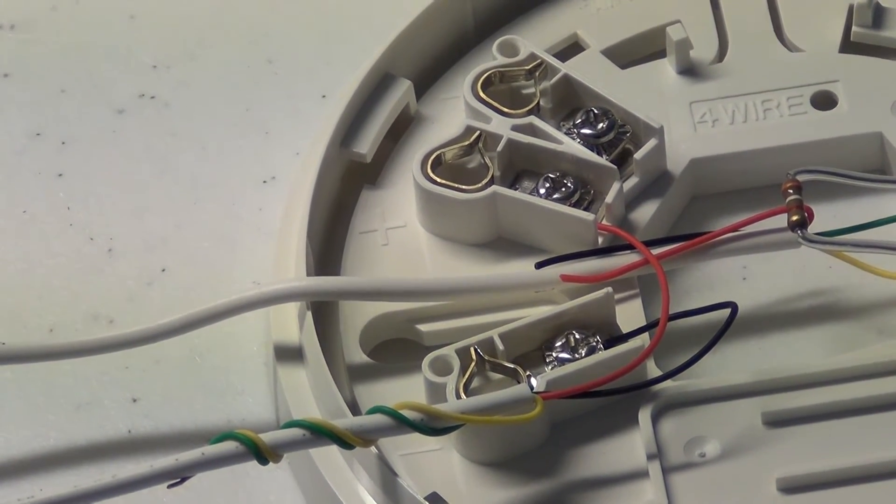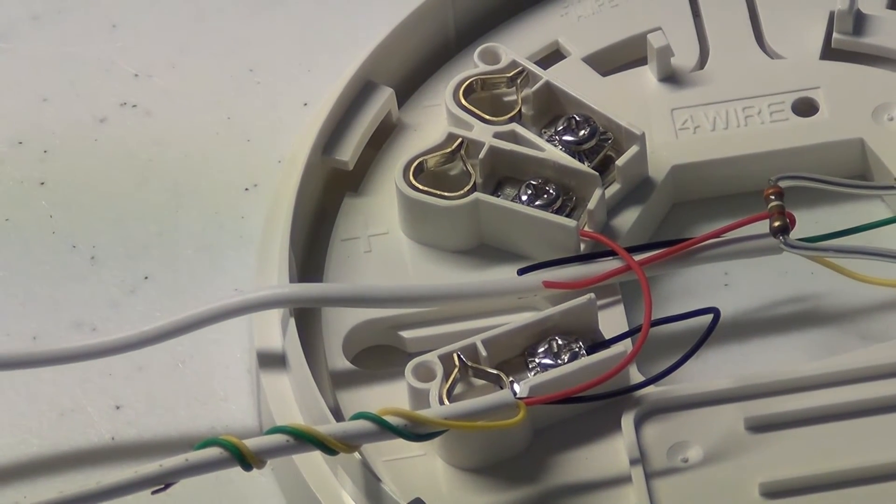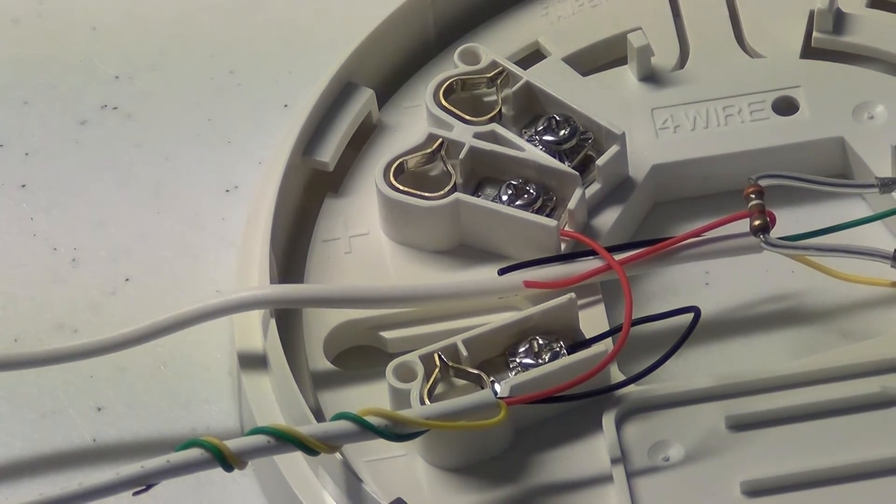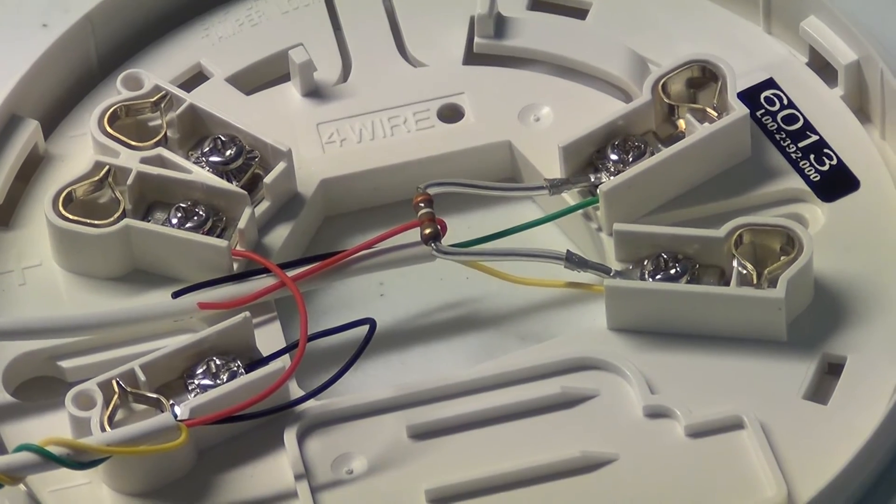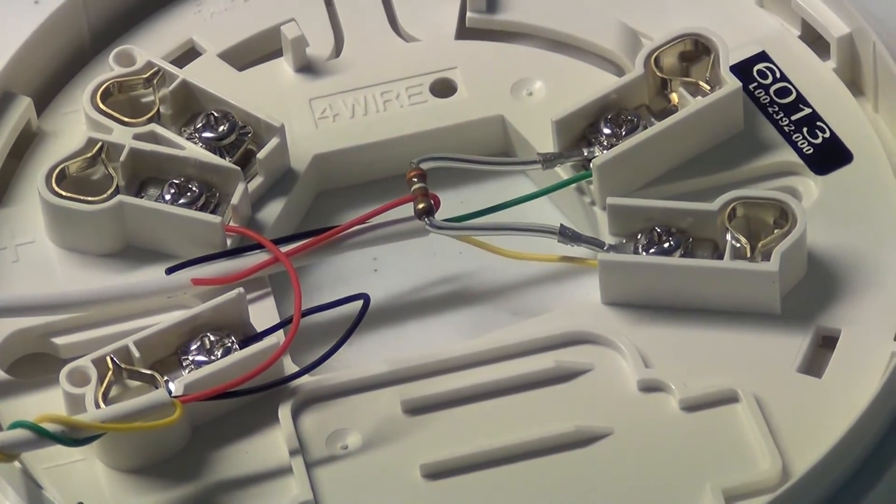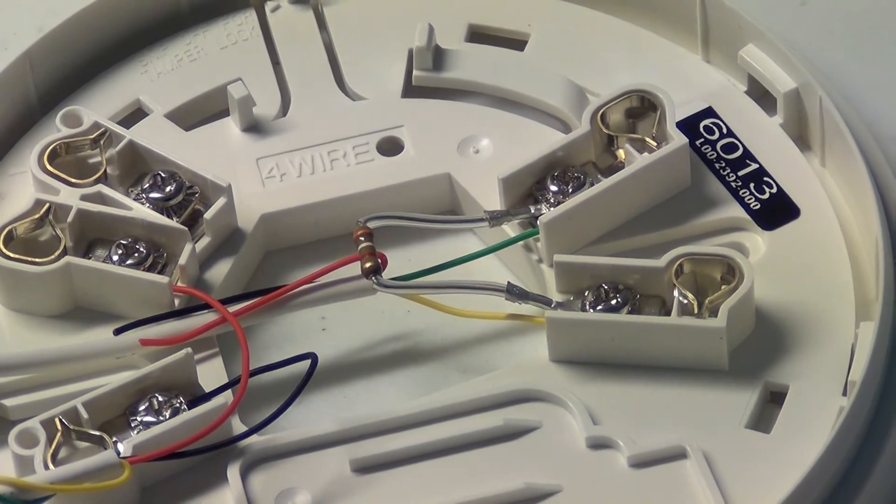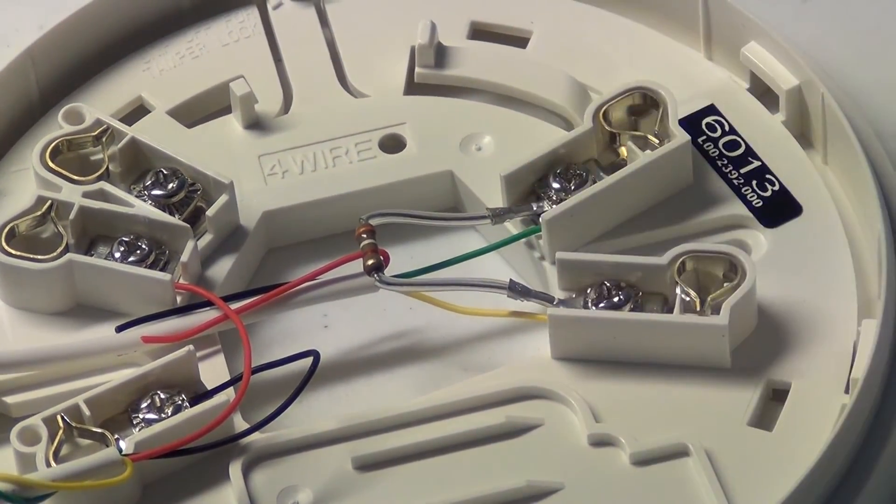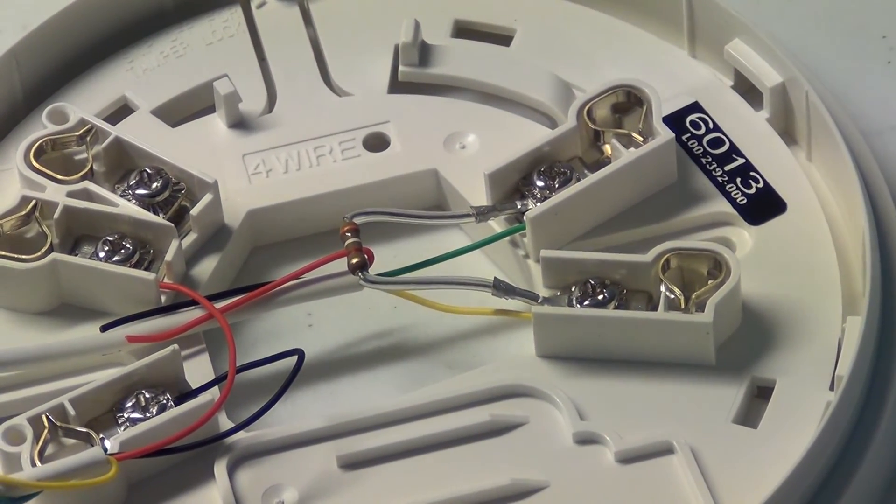So your second positive post on your first smoke CO to your first positive post on your second CO smoke combo and so on and so forth. And then System Sensor has told me that if you're doing more than one smoke CO combo you will just basically run your wires straight to the other terminals on your next smoke CO combo unit.